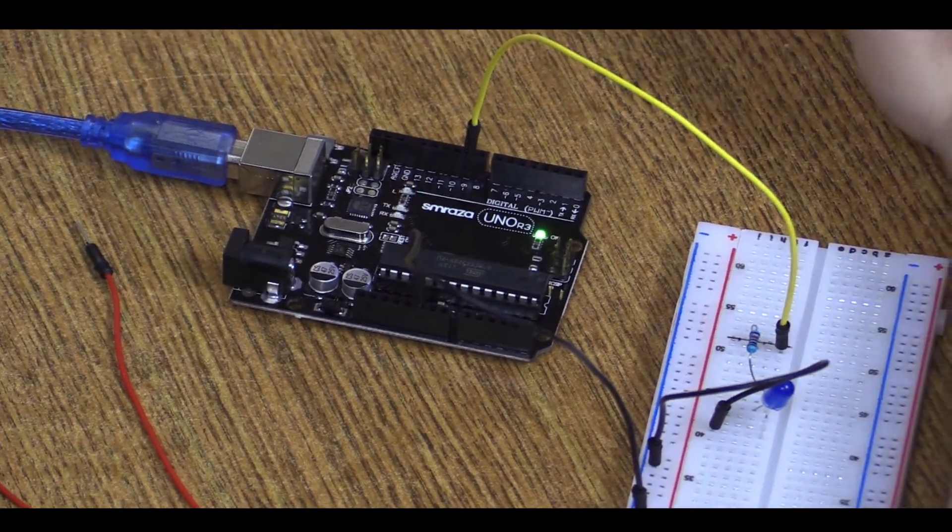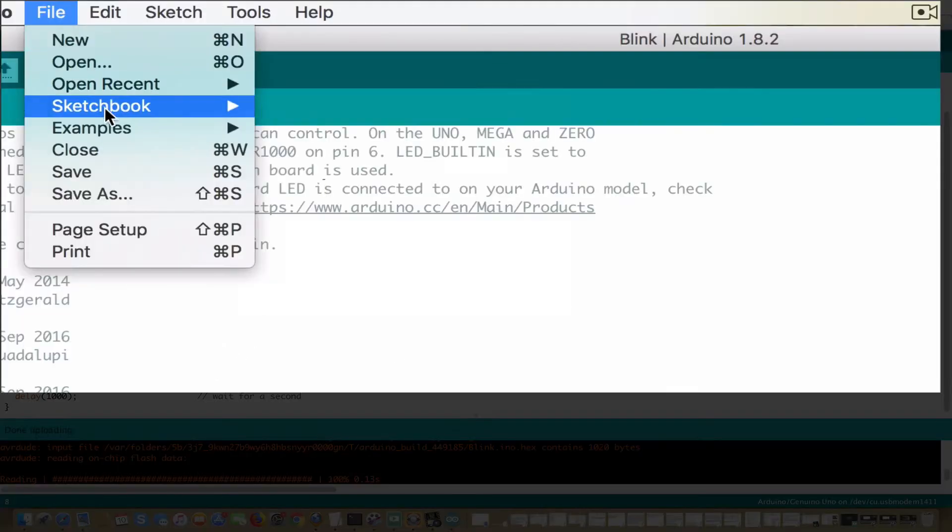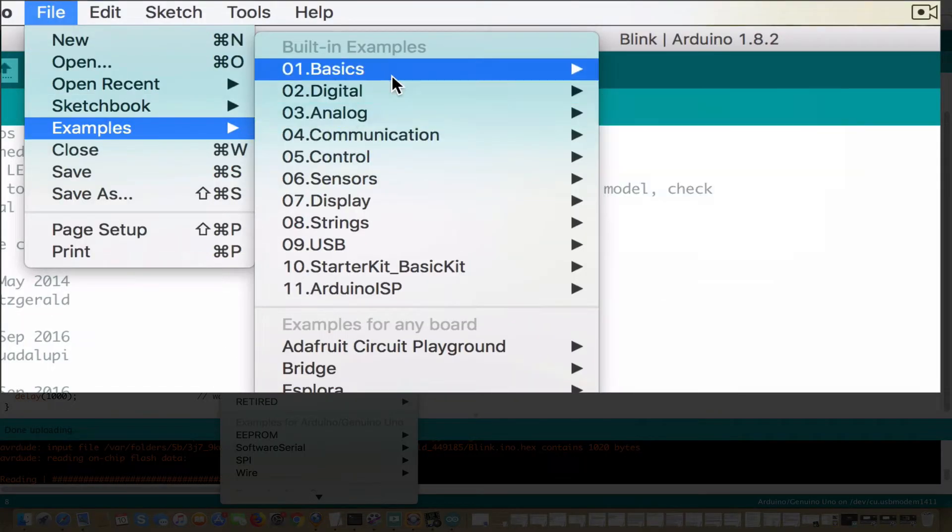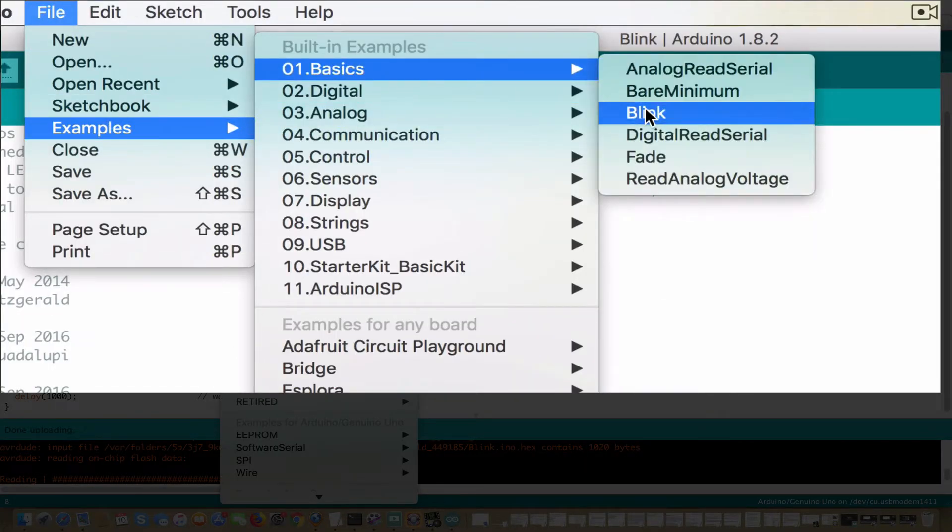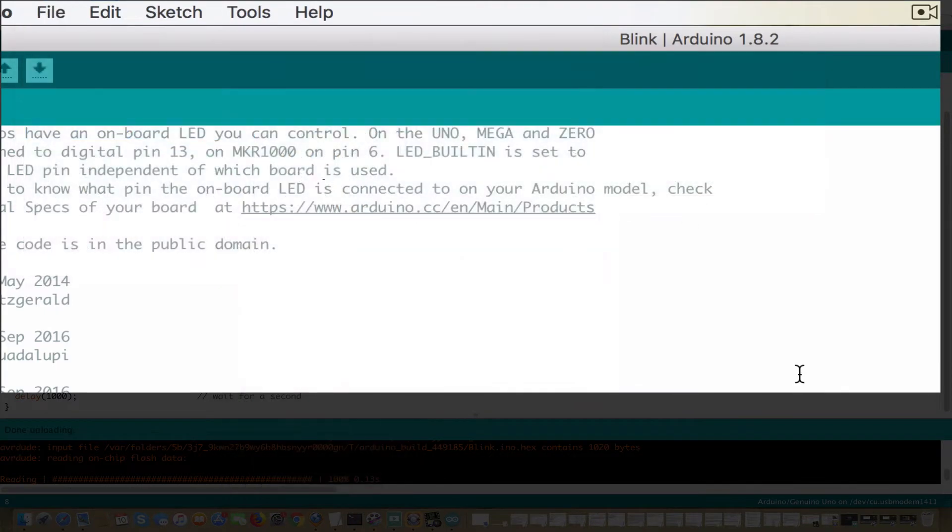This is the simple blink code. If you go to File, Examples, Basics, you'll get Blink. So click on that, and you'll get this code right here.